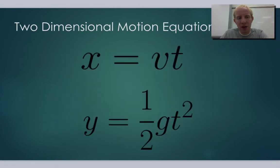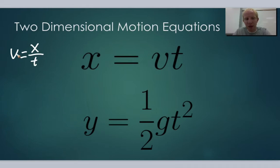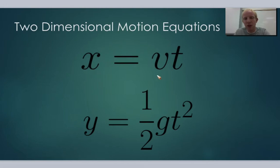We want to make sure we have these equations down. The equation for the x direction is a rewriting of the velocity equation: velocity equals x over time, or change in x over change in time. Rewriting it, you get x equals velocity times time. The y direction's equation is y equals one-half g t squared, just like before. We solve one of these and plug it into the other to get both the x coordinate and the y coordinate.